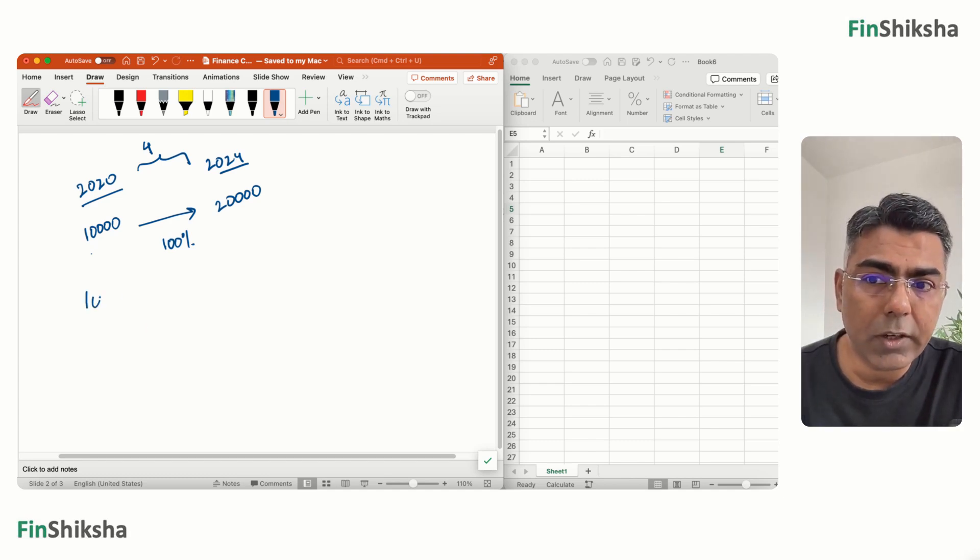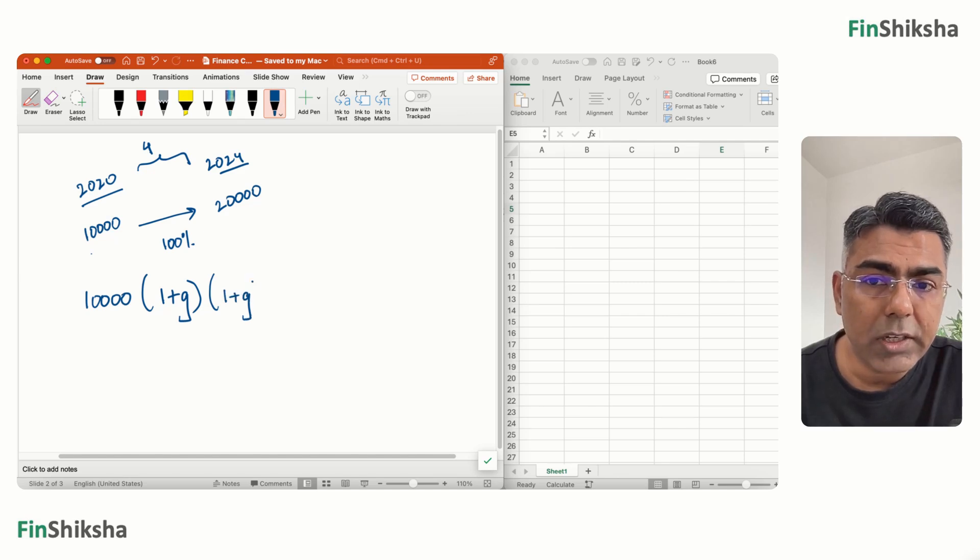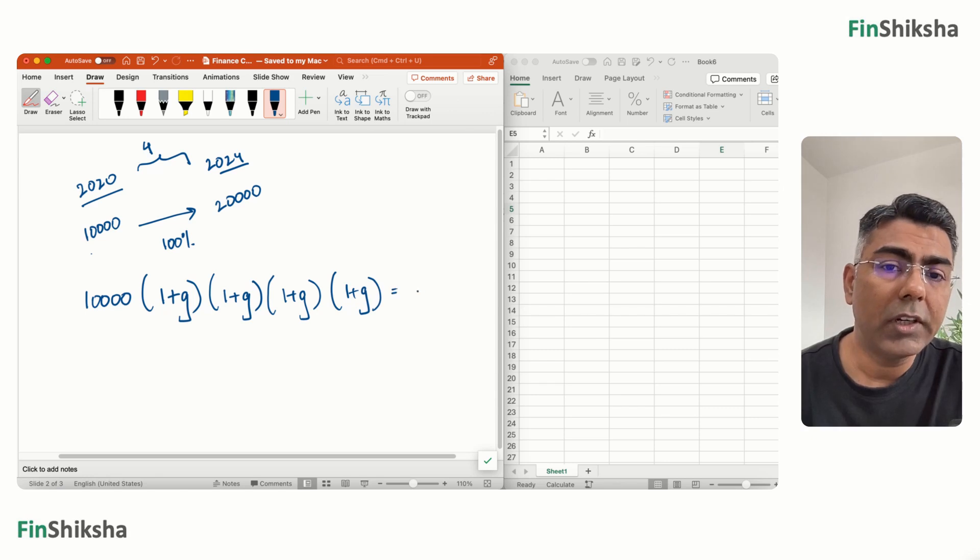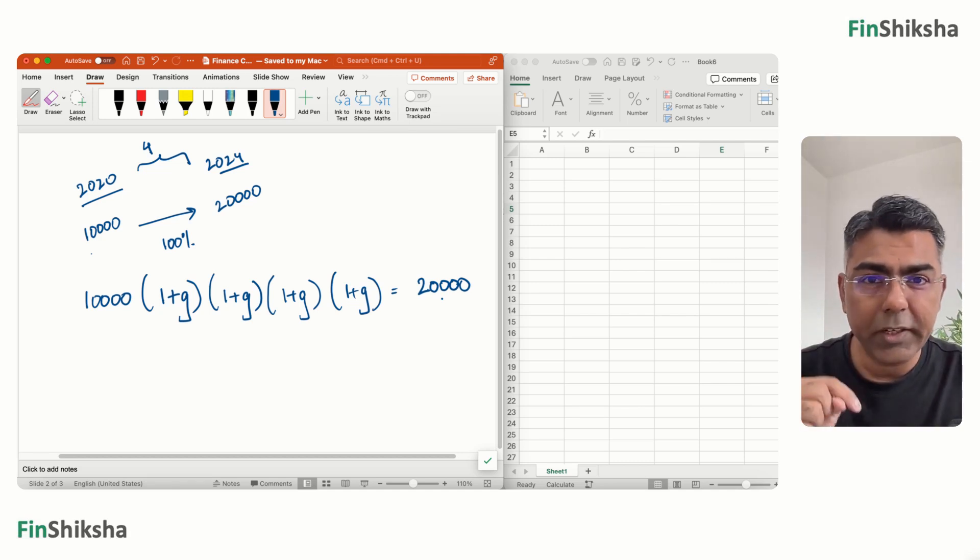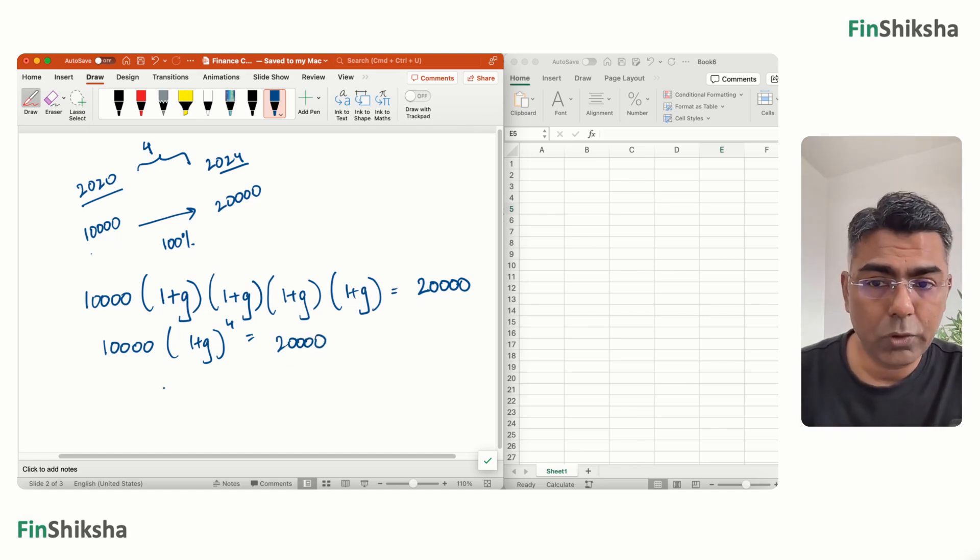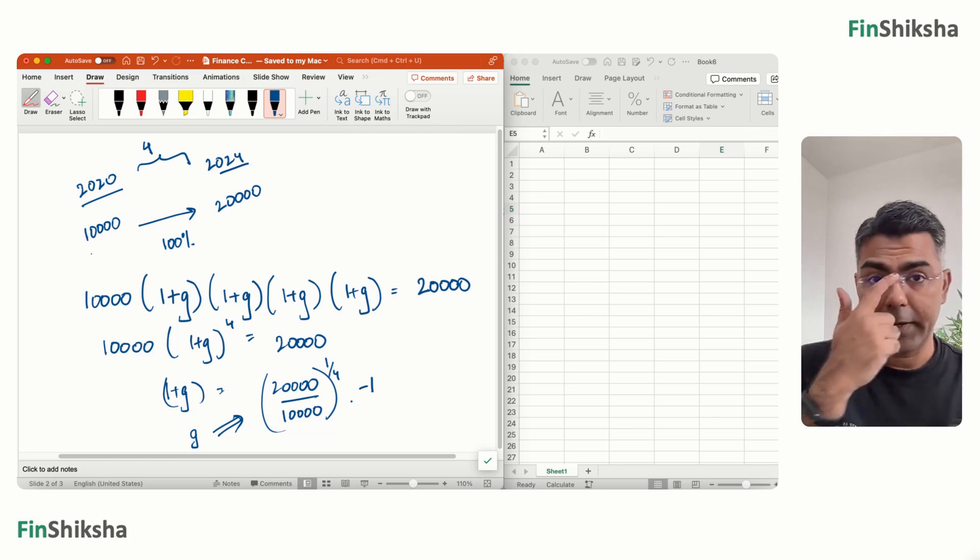Now when you're assuming compounding, then this 10,000 has to grow at a certain rate G and it grows to become 10,000 times (1+G) after the first year. Now this entire amount is going to grow again at a rate (1+G) in the second year, entire amount going to grow at a rate of (1+G) in the third year and so on in the fourth year, and our question says this becomes 20,000. So the answer is not as straightforward as 100% divided by 4, the answer would be slightly lower than that. So this can be written as 10,000 times (1+G) raised to the power 4 equals 20,000. I can then solve for it, so I can do (1+G) equals 20,000 by 10,000. Then I can take the fourth root of both sides, so 1 by 4, and then I can subtract this 1 from here, so I can say G will be equal to this minus 1.